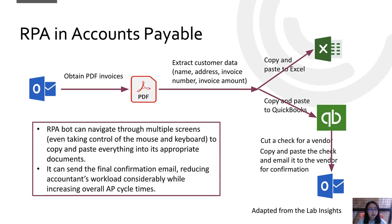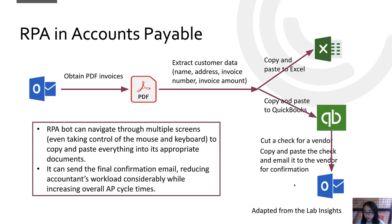One example of RPA in accounts payable involves dealing with invoices. In a manual procedure, an accountant would go to their email — for example, Outlook — to download invoices in PDF format. They would then manually extract customer information and copy and paste that information into other applications, such as Excel or accounting software like QuickBooks. Then they need to cut a check for the vendor and send it via email. I use a flowchart to visualize this process.